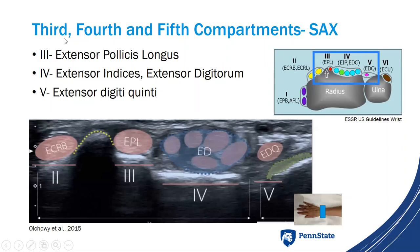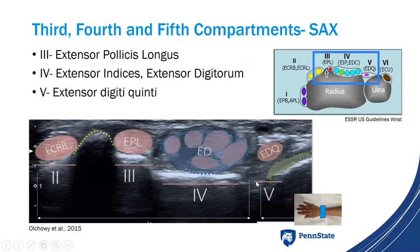Moving on to the third, fourth, and fifth compartments — these can usually be seen together depending on your transducer. Anatomically: the third compartment contains extensor pollicis longus, the fourth contains extensor indicis and extensor digitorum, and the fifth contains extensor digiti minimi. You can see all of these in one view with Lister's tubercle superiorly, the second compartment edge, and the distal radioulnar joint.